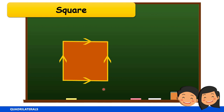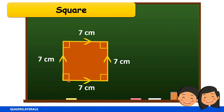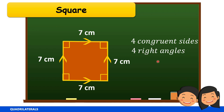A square has the properties of both a rectangle and a rhombus. Just like a rhombus, all its sides are congruent. But in a square, all angles are also congruent — just like in a rectangle, each angle measures 90 degrees, or each angle is a right angle. A square has four congruent sides and four right angles.